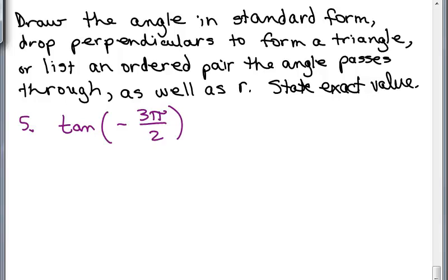All right, next problem, tangent of negative 3 pi over 2. So in this case we could just look at a point on the Y axis. We can't really draw a triangle here, and that's the point 0, 1. And the tangent is defined to be the Y over the X, and by the way, R is 1 in this case. So Y over X would be 1 over 0, which is undefined. So we would say this is undefined.